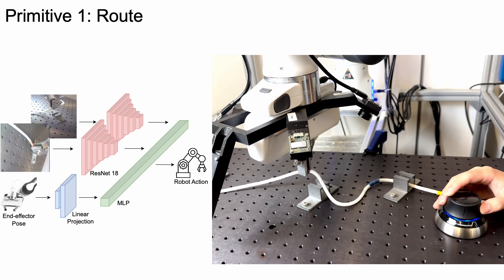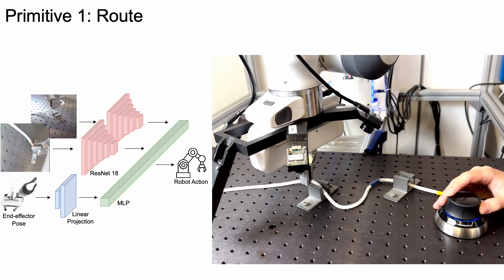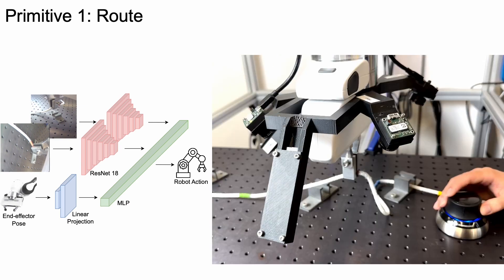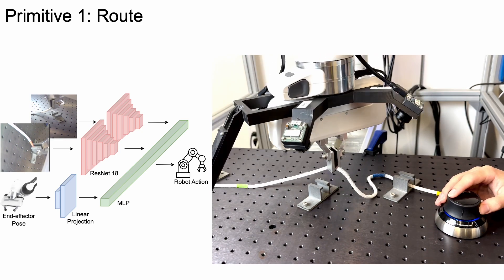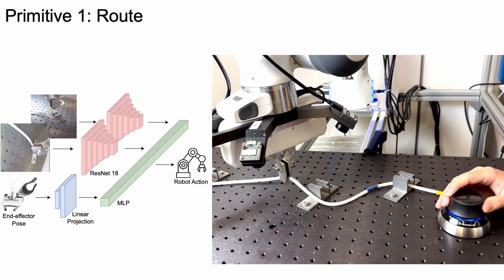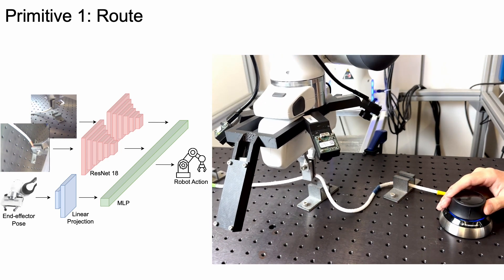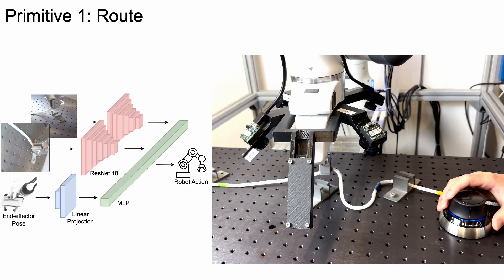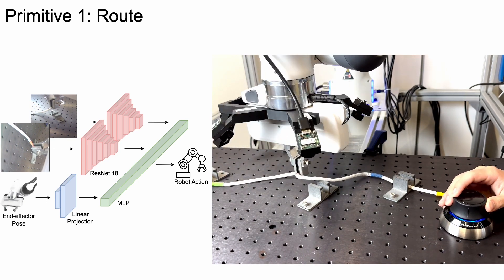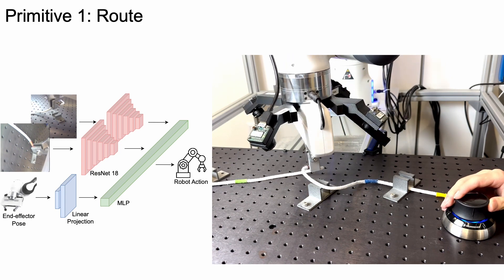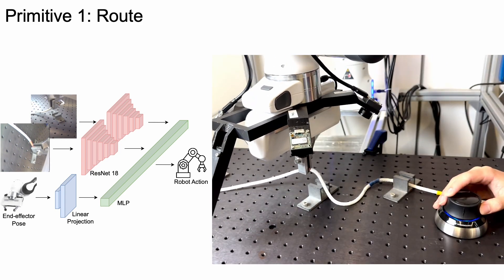Our first primitive, Routes, is trained using imitation learning. The policy controls the robot in XYZ translation and Z-axis rotation using view-invariant sensory input from the wrist cameras fed through separate ResNet-18 encoders along with proprioceptive information. We train this policy using human demonstrations, an example of which is depicted on the right.